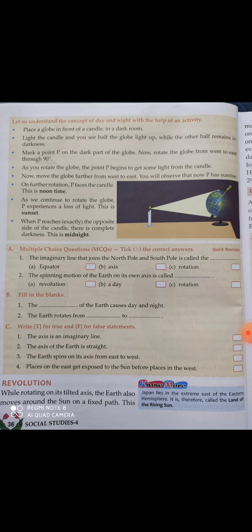The earth revolves like this in front of the sun, and when a point on the earth comes directly in front of the sun, that point receives maximum light from the sun — that is when it is noon time, meaning दोपहर का time (afternoon time).